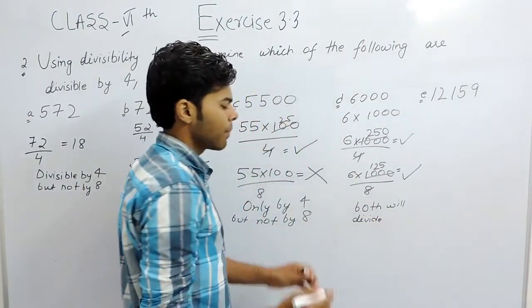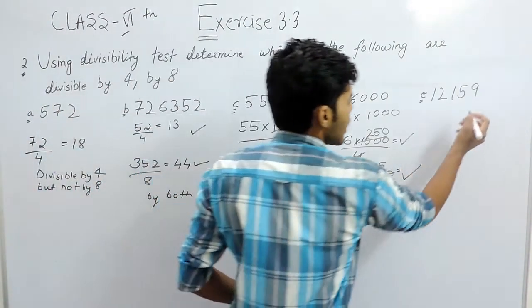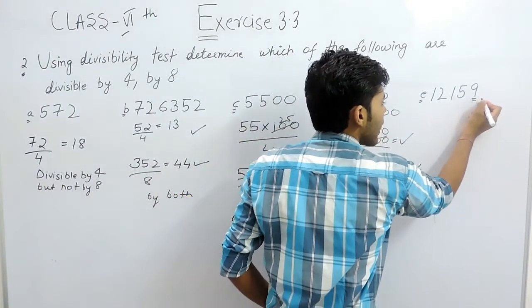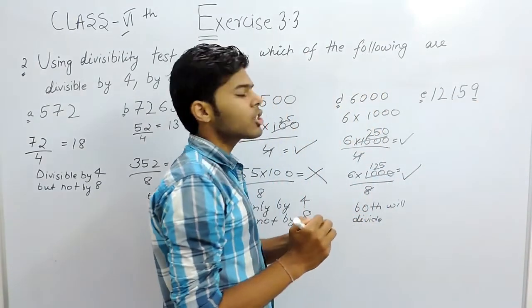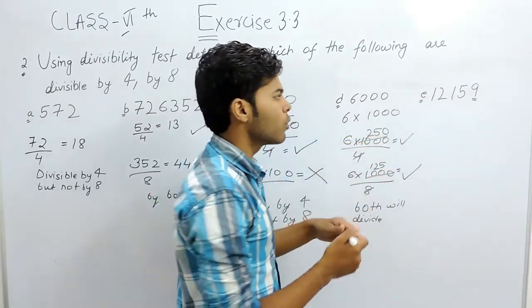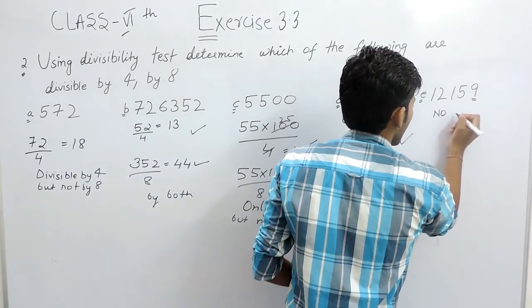And the last part, this is the simplest part you will see among these, because the unit's place is 9. It is not an even number, so it won't be divisible by 2. And if a number is not divisible by 2, it cannot be divisible by the multiples of 2, means 4, 6, 8, etc. So no.